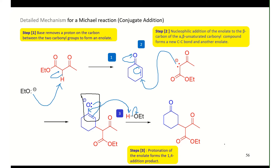That should give you your product. Your product, if you notice, is that of the substituted acetoacetic ester. So we can easily carry out hydrolysis followed by decarboxylation. We end up with a very interesting compound which is a 1,5-dicarbonyl — a 1,5-diketone — and it has what we call a hanging methyl. This species is enolizable, and we're going to do the Robinson annulation.